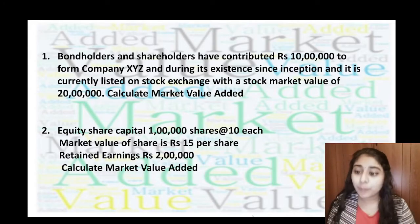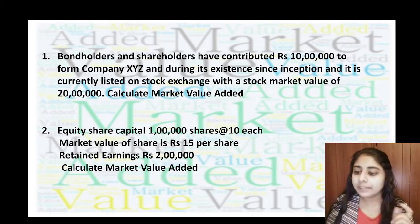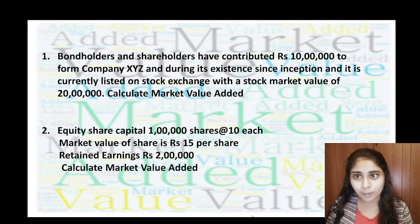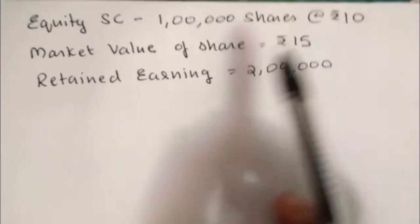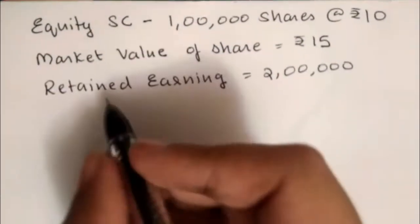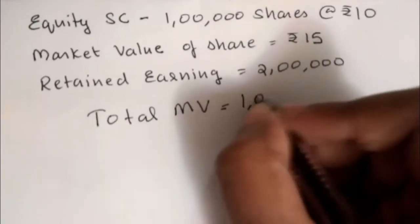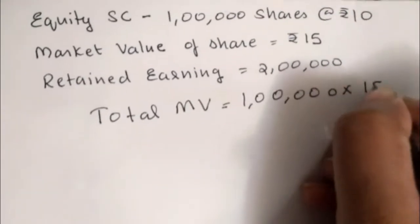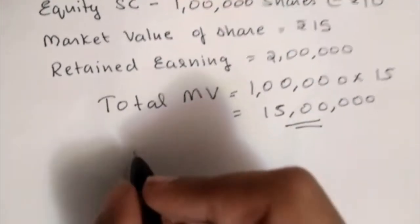Second problem: Equity share capital is 1 lakh shares at ₹10 each, market value per share is ₹15, and retained earnings are ₹2 lakh. Calculate the Market Value Added. First, we calculate the total market value: 1 lakh shares multiplied by ₹15 per share equals ₹15 lakh.